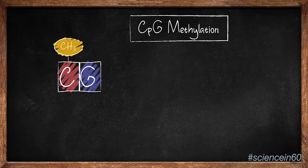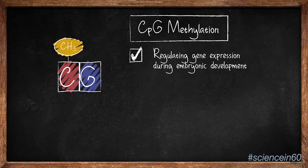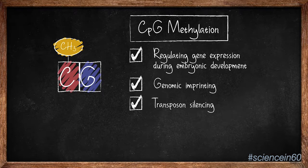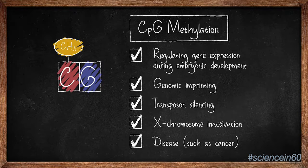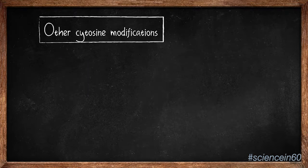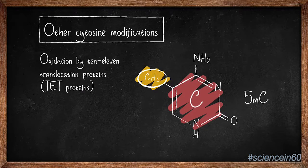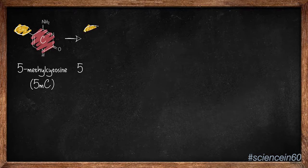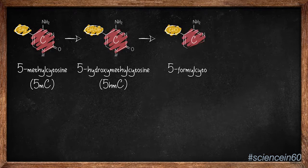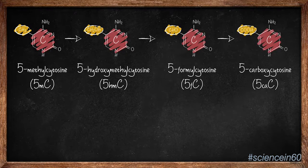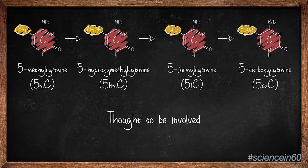CpG methylation is often associated with regulating gene expression during embryonic development, and in processes such as genomic imprinting, transposon silencing, and X-chromosome inactivation. Changes in methylation are also associated with diseases such as cancer. Other cytosine modifications can occur within DNA, formed by the oxidation of 5-MC by the enzyme TET proteins. 5-MC is converted into 5-hydroxymethylcytosine, then 5-formylcytosine, and finally 5-carboxycytosine. The roles of these modifications are less well-established, but are thought to be involved in gene regulation.